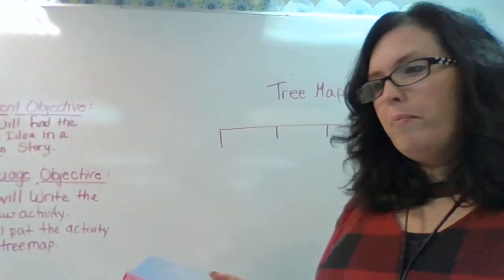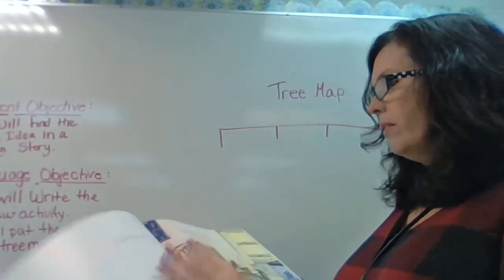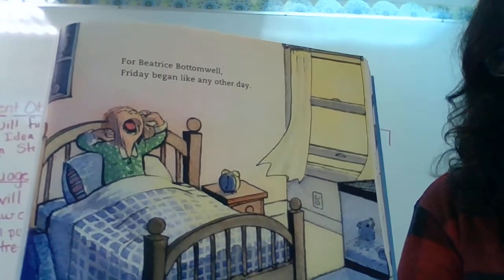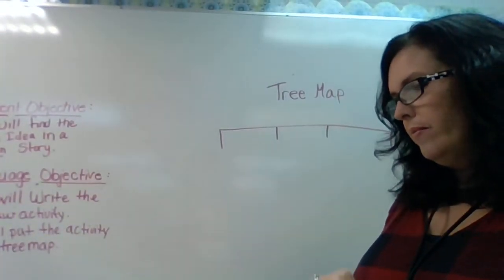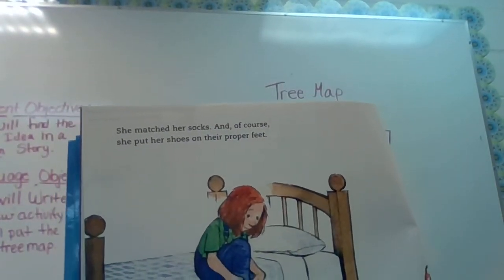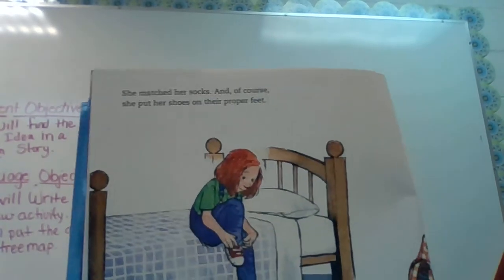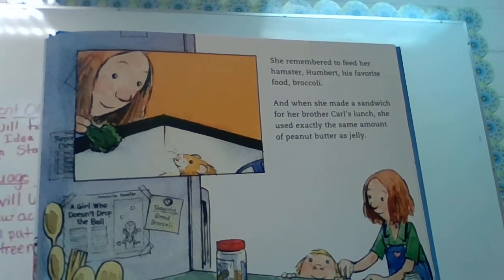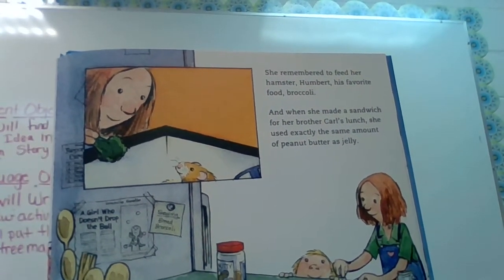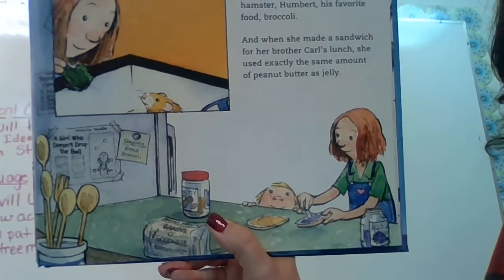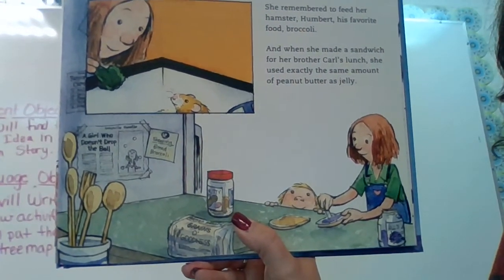So — The Girl Who Never Made Mistakes. For Beatrice Bottomwell, Friday began like any other day. She matched her socks and of course she put her shoes on their proper feet. She remembered to feed her hamster Hubert his favorite food — broccoli. And when she made a sandwich for her brother Carl's lunch, she used exactly the same amount of peanut butter as jelly. Look at how nice that is. Here's her little brother Carl and she's helping make him a lunch.